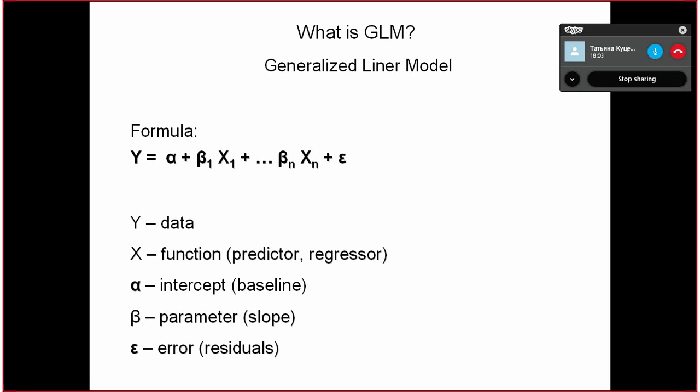And if we find it in the data or not depends on what will be the parameter or the slope of this predictor. It is absolutely linear. For example, if β is equal to zero, this means that in the data Y there is absolutely no contribution of the function X.